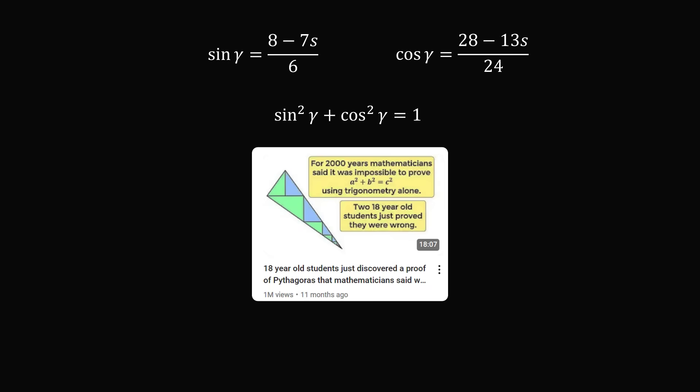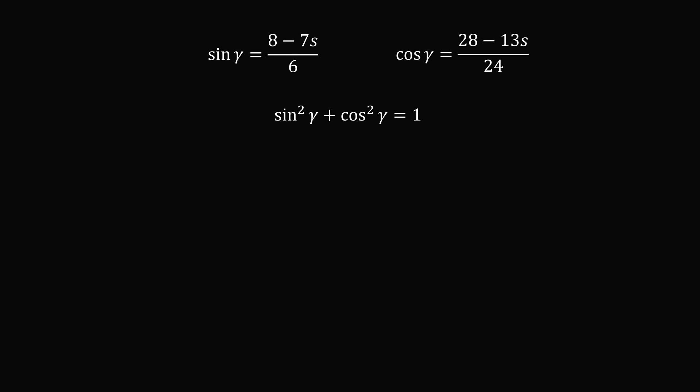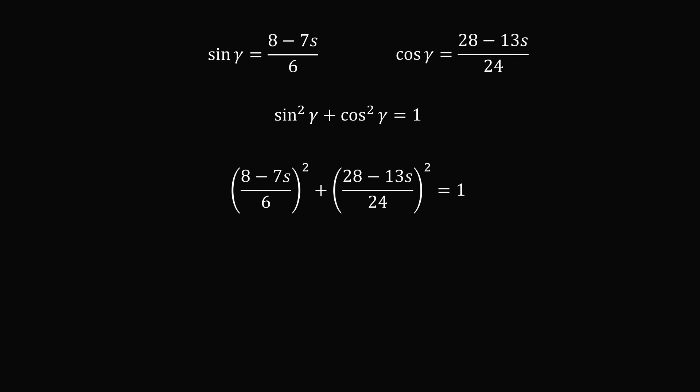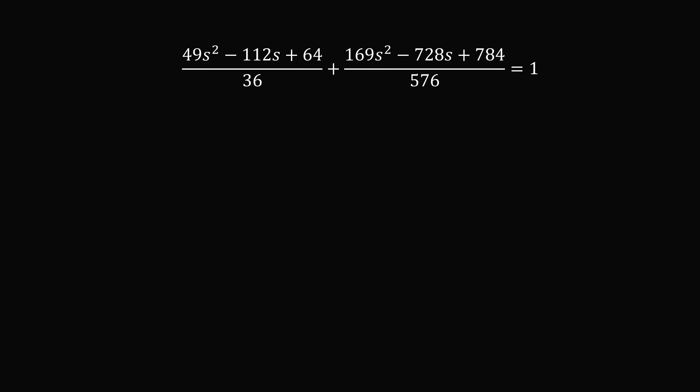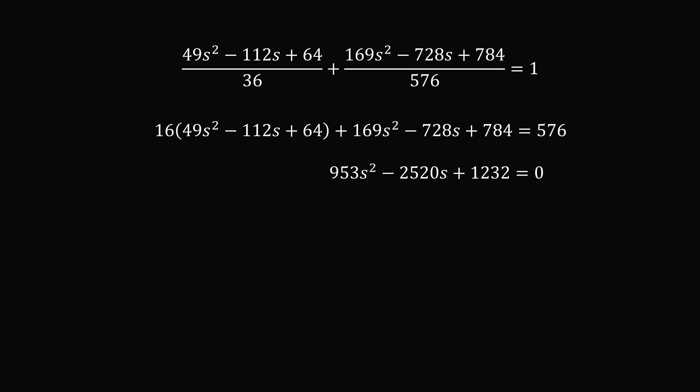We use the fundamental identity sine² gamma plus cosine² gamma equals 1. Substituting our expressions and expanding, then multiplying both sides by 576 and grouping like terms, we arrive at the quadratic equation 953S² minus 2520S plus 1232 equals 0. This is the same quadratic equation we had in Method 1.